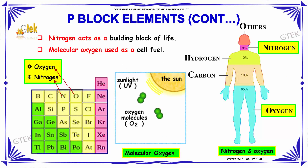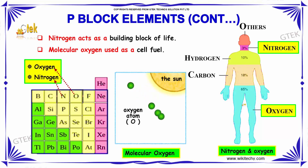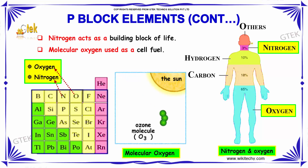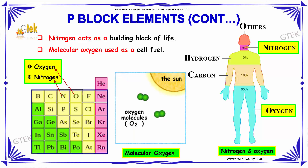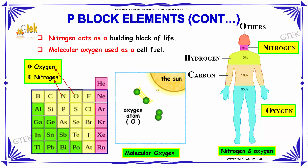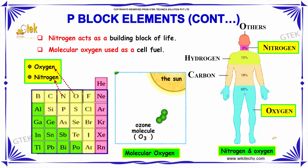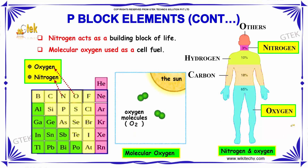Nitrogen acts as a building block of life. Here is a human system diagram — you can see 3% is occupied by hydrogen. Meanwhile, molecular oxygen is used as a self-fuel, and you can see the usage of oxygen in humans.